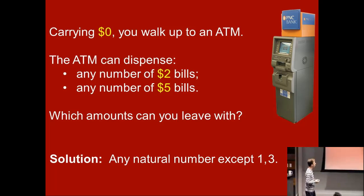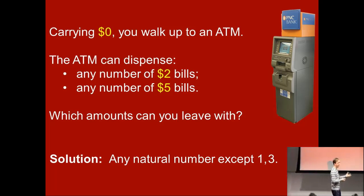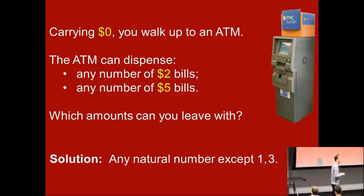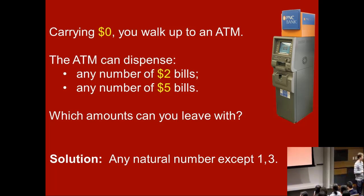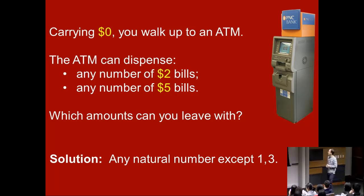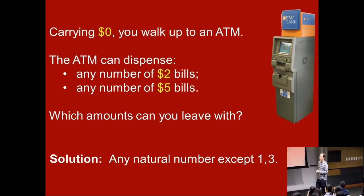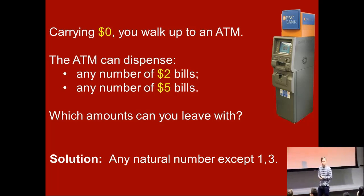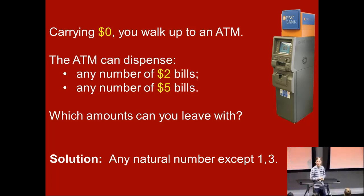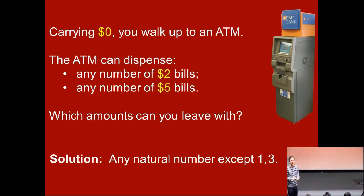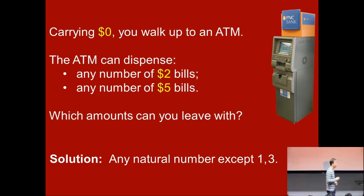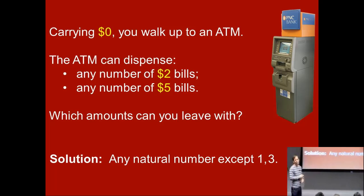Here's a little puzzle: which different amounts could you possibly leave with? For example, you could leave with $7 if you got a $2 bill and a $5 bill. Can you leave with $8? Yes — you can get four $2 bills. The answer is you can get any natural number except for 1 and 3.